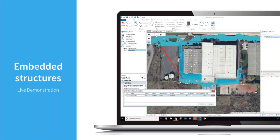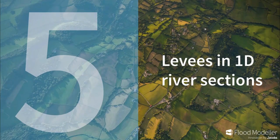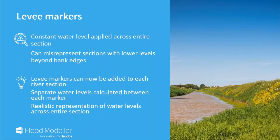Returning to the presentation — that covers embedded structures. Moving on, I want to talk about levees and incorporating those into 1D river sections. The problem is that a 1D model by definition calculates a single constant water level and applies this across the entire cross section. This is absolutely fine most of the time, but in some scenarios you might have quite high banks with low-lying areas beyond them — i.e., levees — and in that situation as the water level rises, you'll show the area beyond the high bank getting wet before the water has actually exceeded that bank height, because it's drawing a single horizontal water level across the whole cross section.